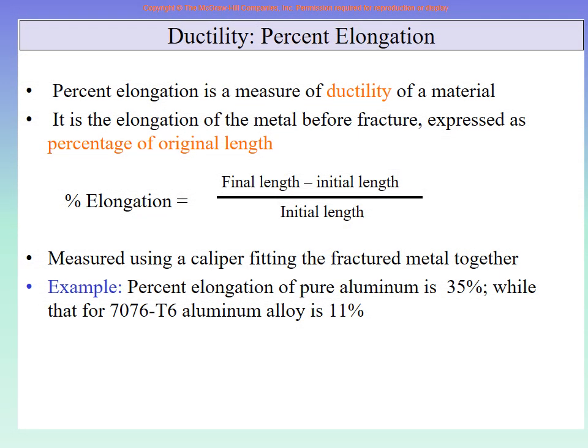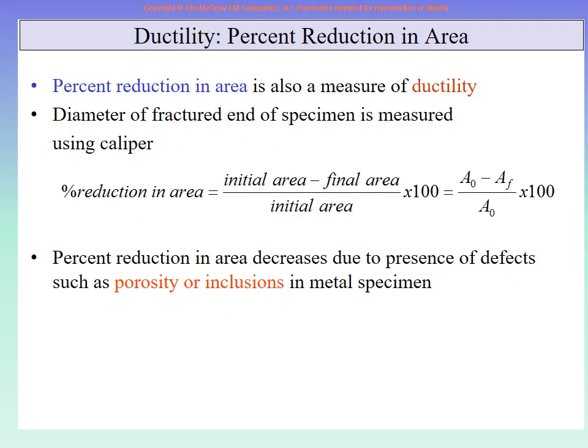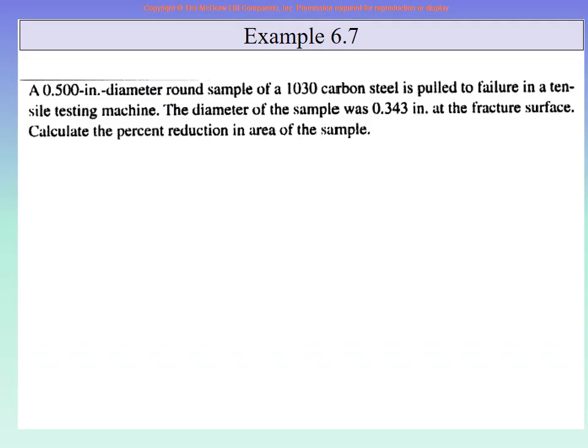To find the ductility of a material, it can be expressed as percent elongation — the total change in length divided by the original length — or as percent reduction in area, the total change in area divided by the original area. For example: a 0.5 inch diameter round sample of 1030 carbon steel is pulled to failure in a tensile testing machine. The diameter at the fracture surface was 0.343 inch. Calculate the percent reduction in area.